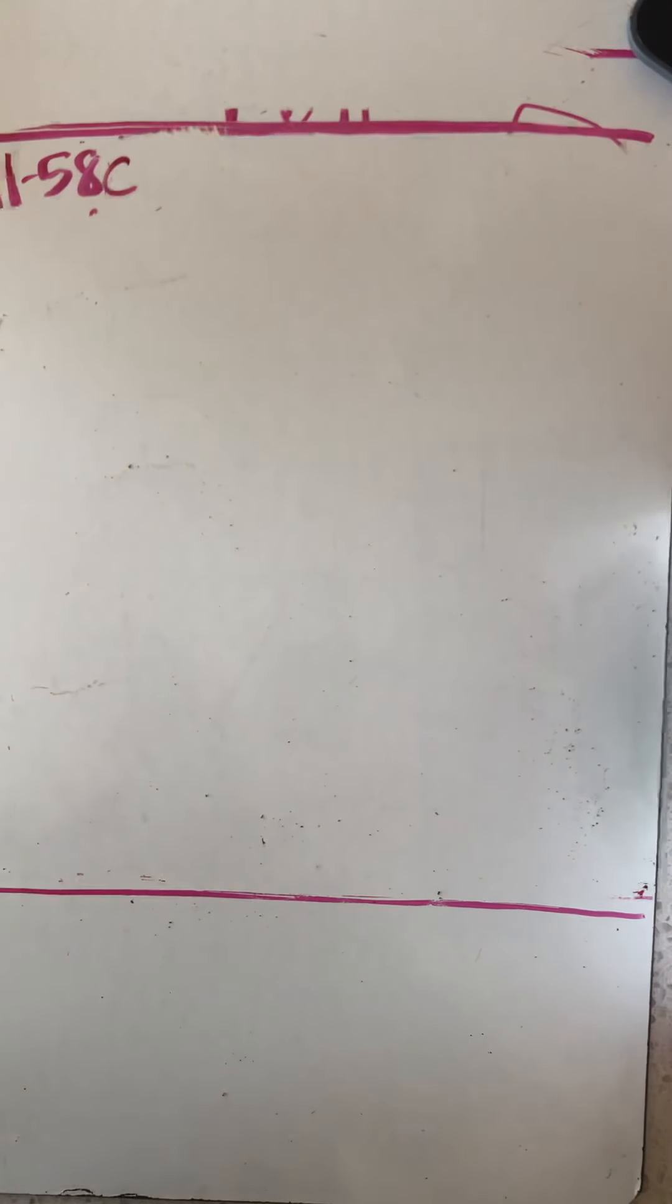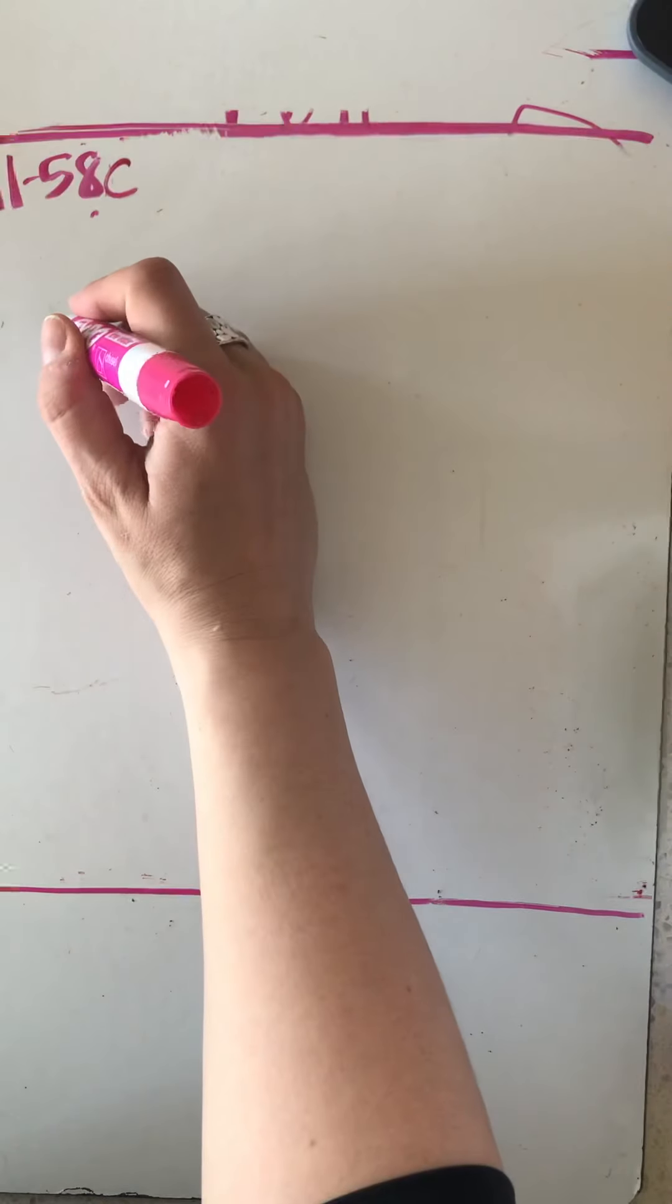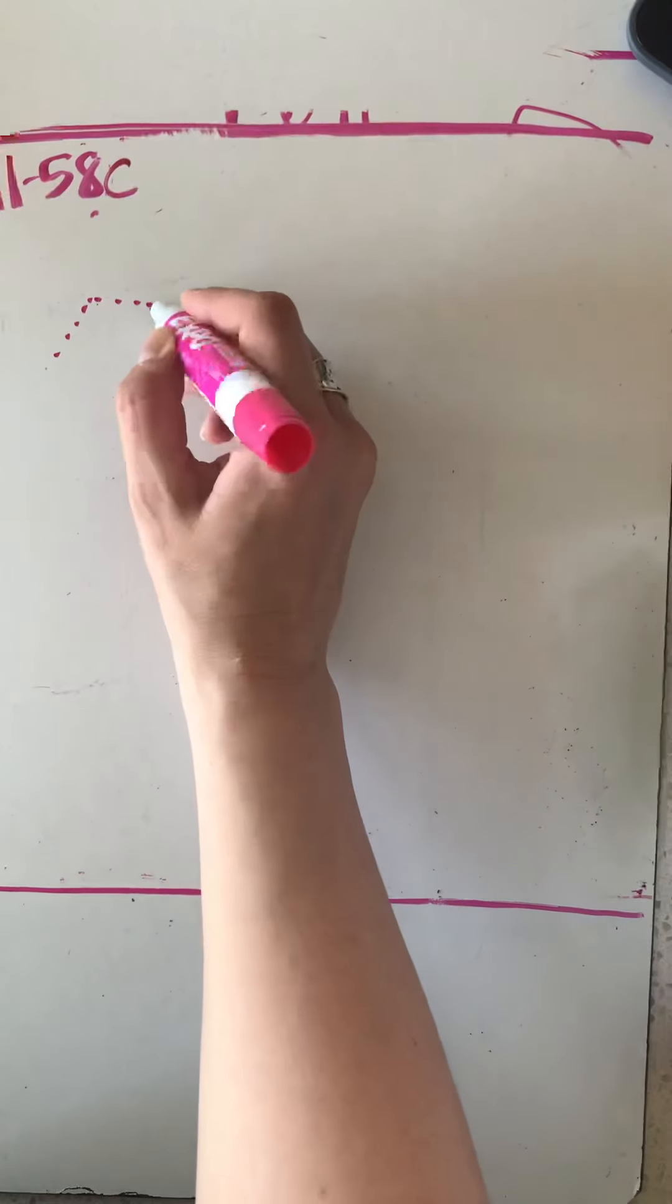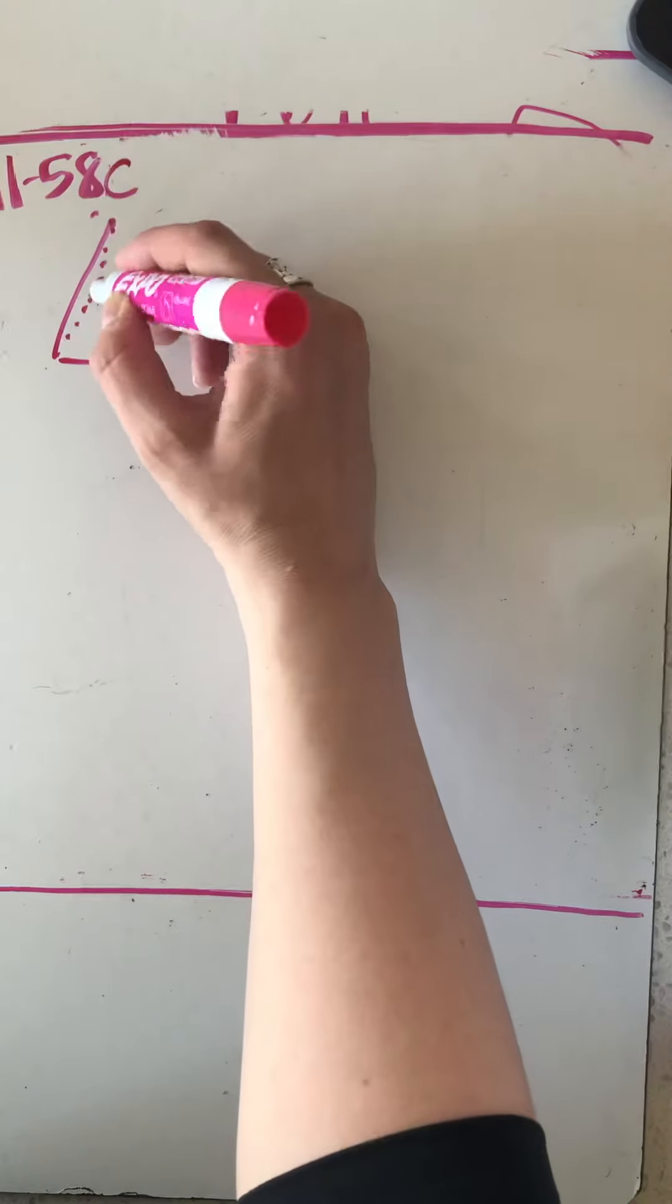This is 1158C where they want you to find the volume and surface area of a square pyramid. So first I'm going to draw my shape. I've got my square and then my apex. Draw your shapes.